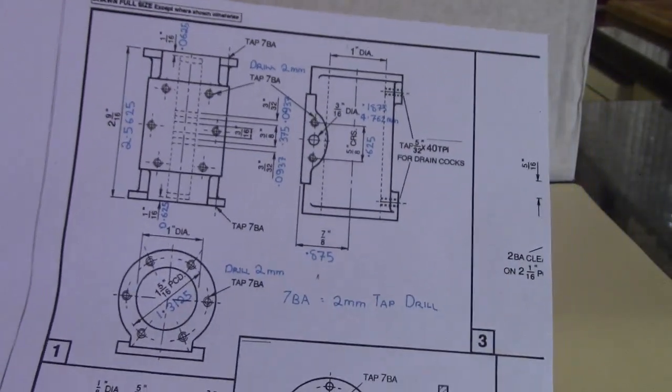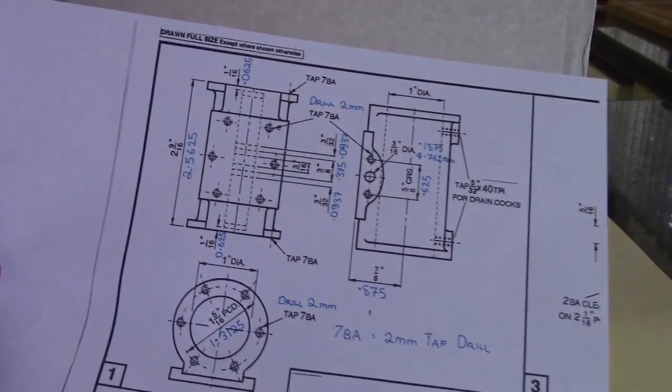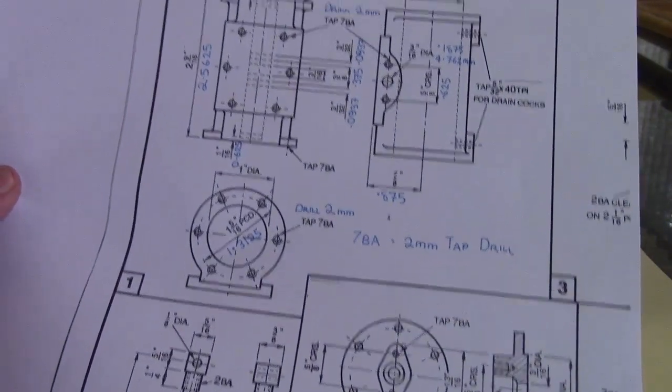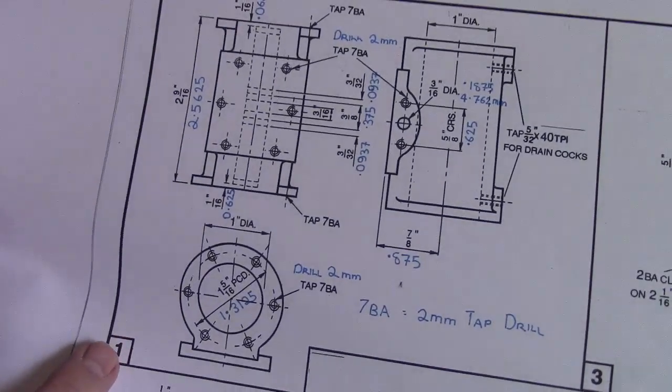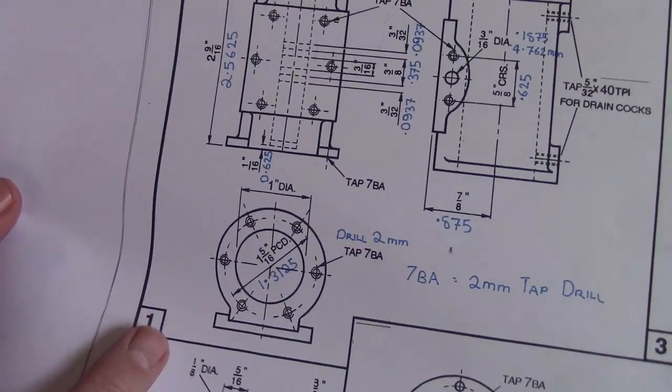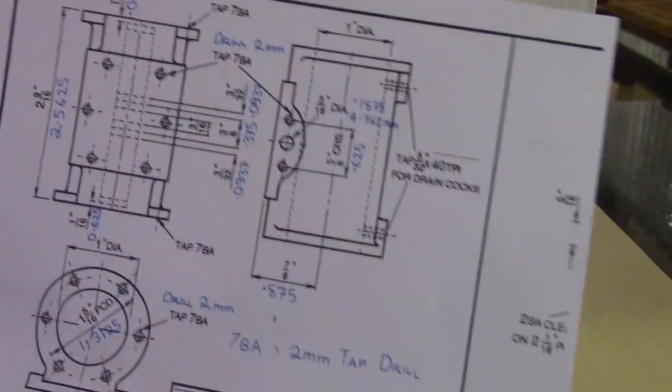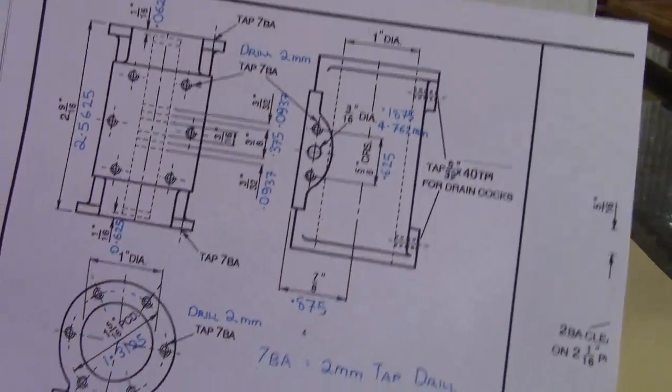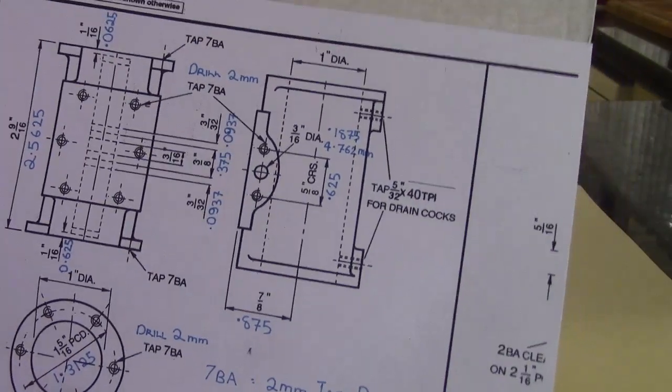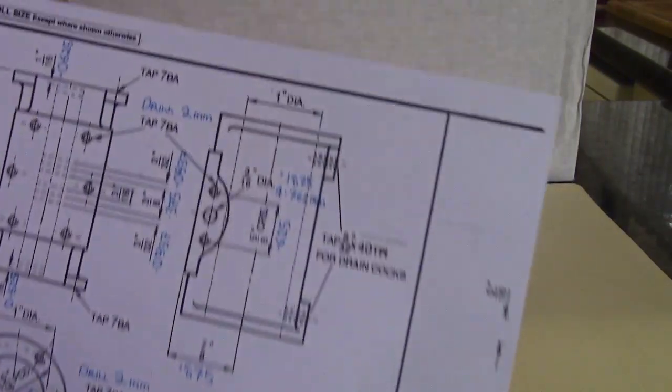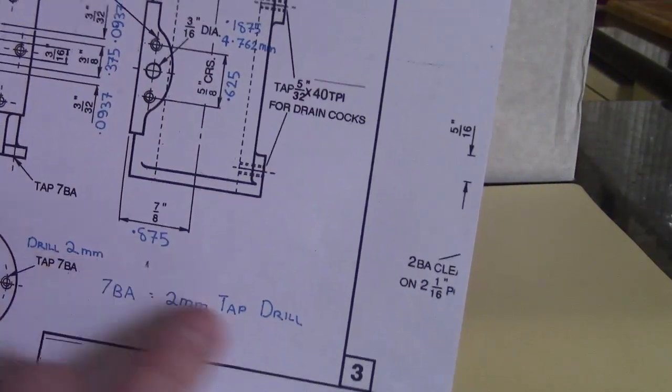Before I do any builds I like to make a photocopy of each section. So this is number one which is obviously the cylinder. I photocopy that section, I write notes and things on it, tapping sizes for different holes.